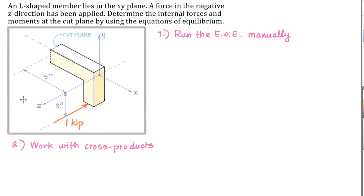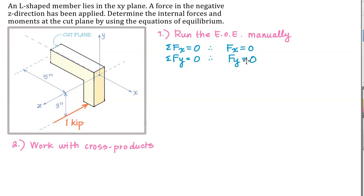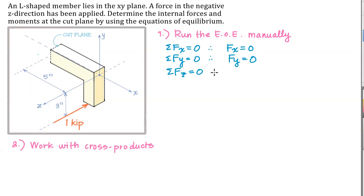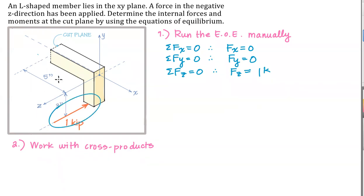In order to run the equations of equilibrium manually, the first thing we want to do is summation of forces. In the x-direction equals zero — there is no x-direction force at the cut plane required for equilibrium. We can do the y-direction and make the same conclusion: nothing going on there. Now let's do the z-direction — I need an equal and opposite force back at that plane. F sub z has a one-kip magnitude equal and opposite to the applied force, which goes in the negative z direction, so the one we want back at the cut plane is going to be in the positive z direction.